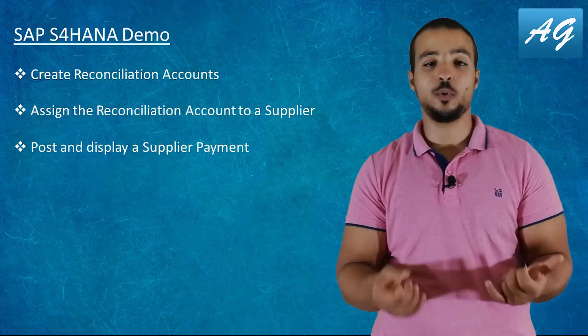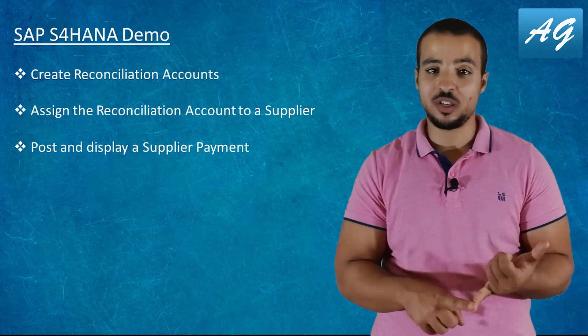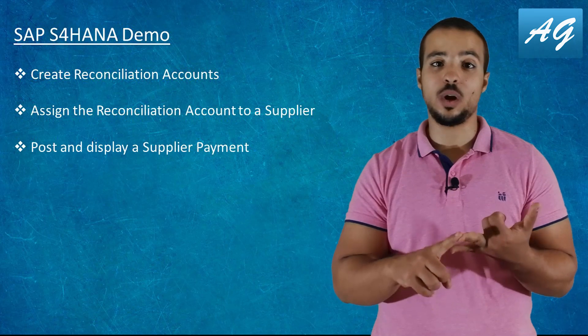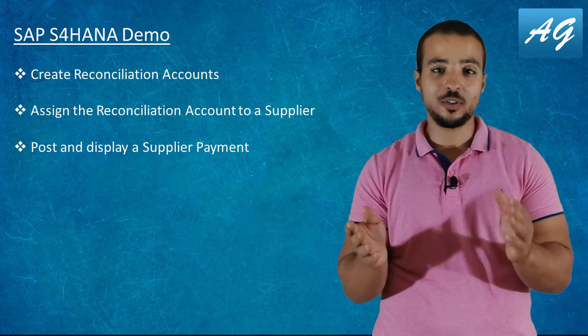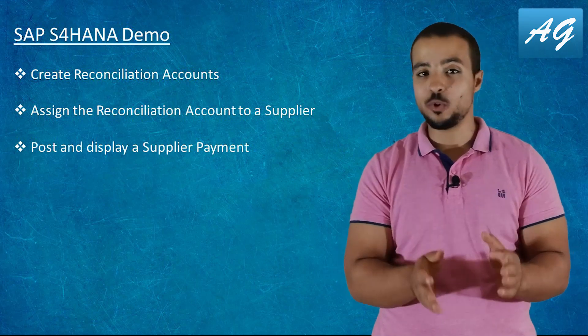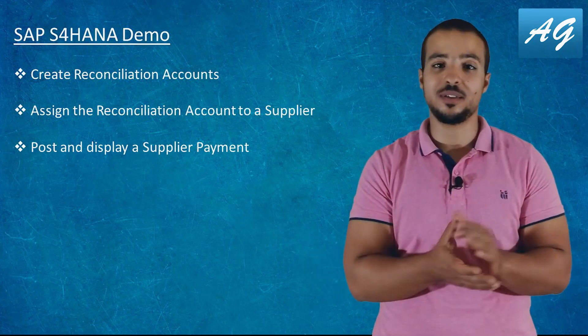In most companies, you are going to find several reconciliation accounts for payables. Usually you have local vendors and foreign vendors, and you can also have other reconciliation accounts. For each vendor, we have to assign one reconciliation account. I'm going to demonstrate how to create the reconciliation account, assign it to a supplier, and then explain a financial entry to see how it is posted to both the reconciliation account and the vendor at the same time.